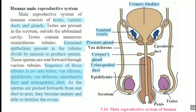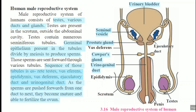The sequence continues: vas efferens, epididymis, vas deferens, ejaculatory duct, and urinogenital duct. The ejaculatory duct and urinogenital duct are shown in the diagram. The urinogenital duct is so named because through this part, both urine and secretion from the testis pass — it is a common passage. Therefore it is called the urinogenital duct.